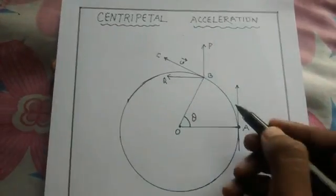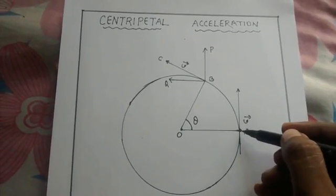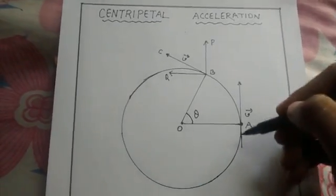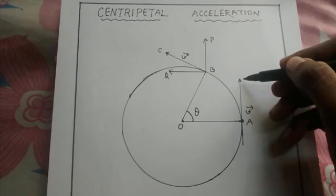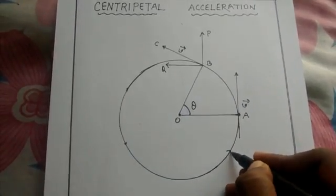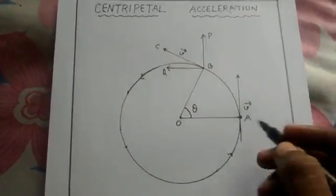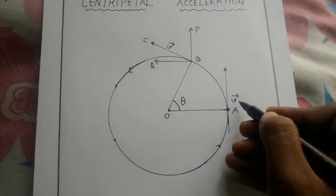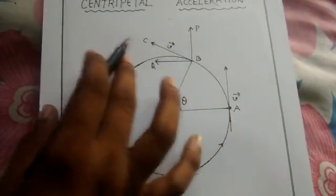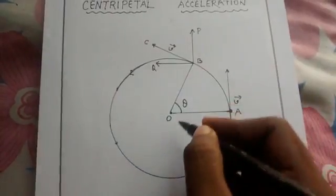Now we know very well that velocity is always directed along the tangential direction. So at point A the velocity is in the upward tangential direction. Let us suppose its magnitude is v. At point B the direction will be like this — it is also tangential.